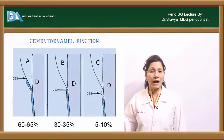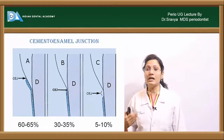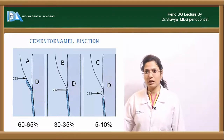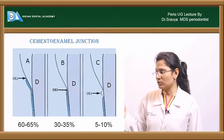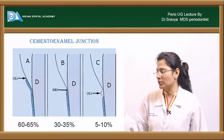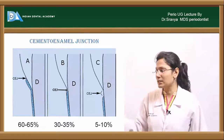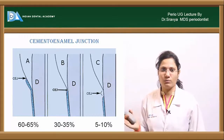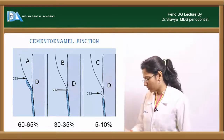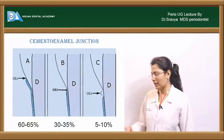Patients with a gap junction CEJ are more prone to dentinal hypersensitivity. Those with a butt junction also risk hypersensitivity if the cementum is removed. The best CEJ is the overlap type, where cementum completely covers the enamel.